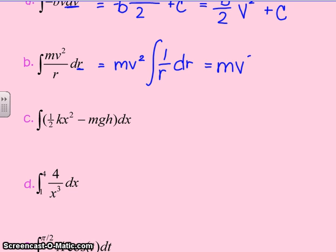That's equal to mv squared. And this 1 over r dr follows one of our rules. It's the ln of r. And then we always add a plus c to the end.